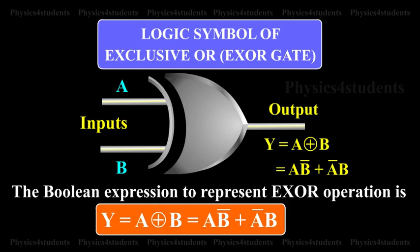The boolean expression to represent XOR operation is Y equals A exclusive or B, which equals A and B complement, or A complement and B.